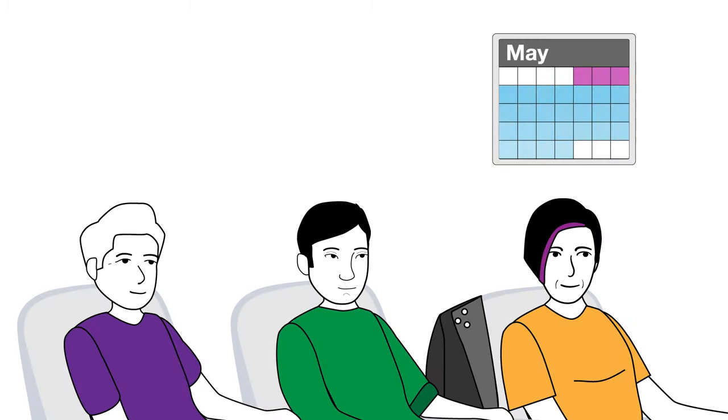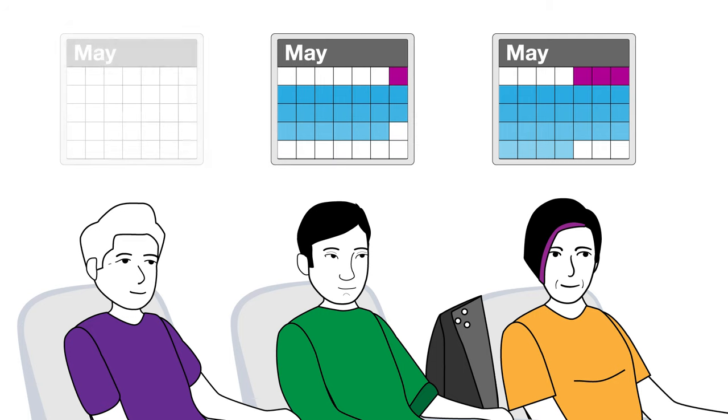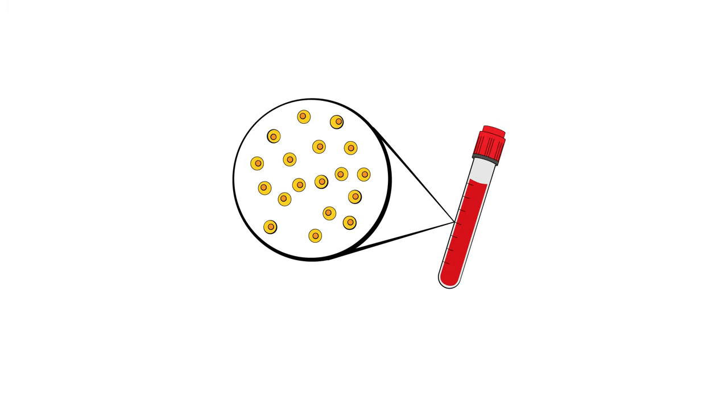The number of cycles and the length of each cycle depend on your treatment plan. You'll have blood tests before starting treatment to see what your normal blood counts are. Blood counts show the number of different blood cells.